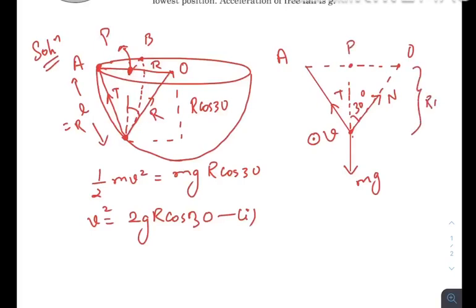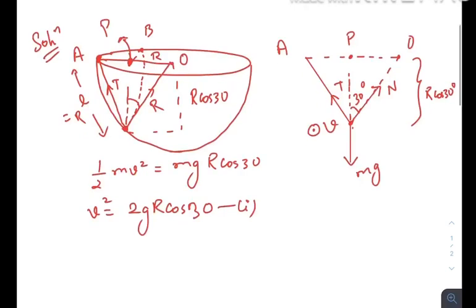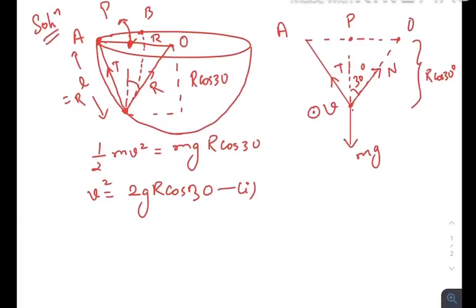Net force towards the center is T cos 30 plus N cos 30 minus mg. So T cos 30 plus N cos 30 minus mg equals m V squared by R cos 30.